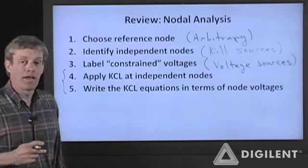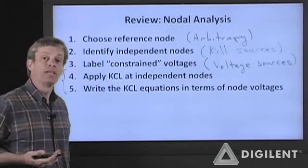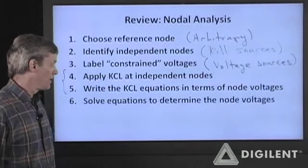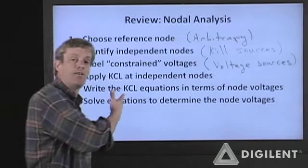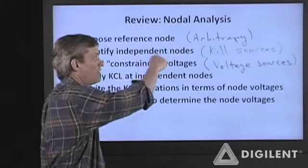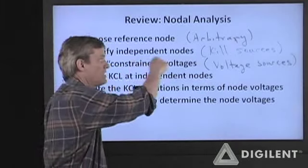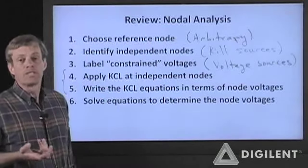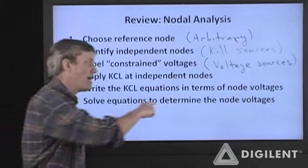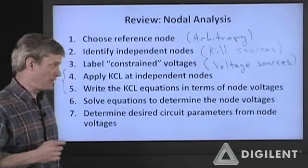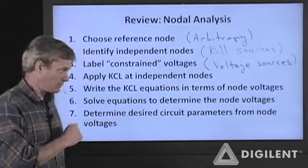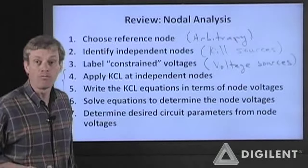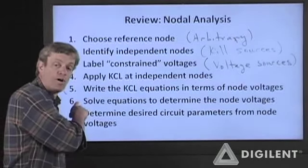I'll be combining these two steps into a single step to spend as little time as possible doing the analysis. This gives us a set of N equations in N unknowns. The N unknowns are the node voltages — the voltages at the independent nodes. We can solve those equations to determine the node voltages. The node voltages are some subset of the total unknowns in the circuit, but they provide the information necessary to determine any other desired circuit parameter. If you have the node voltages, you can determine the currents through any part of the circuit or any other voltages.